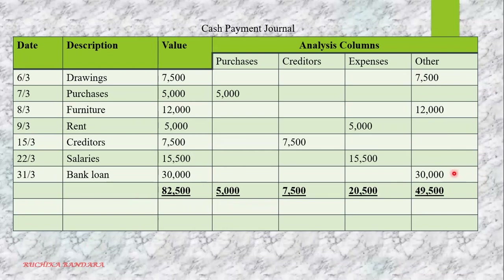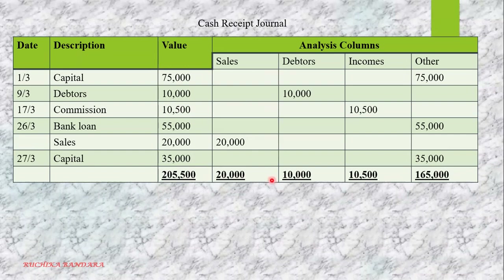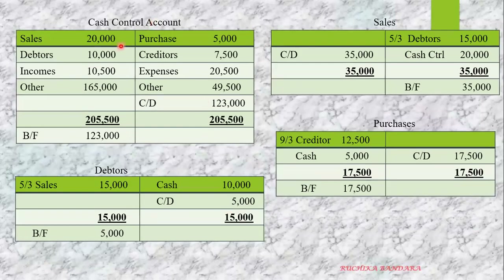After entering everything, we have to get the vertical addition. Sales $20,000 is the total. Debtors $10,000. Incomes $10,500. Other column $165,000. Get the value total as well — either horizontal or vertical addition gives the same amount. Then we think of the double entry. For total cash sales: cash control account debit $20,000, sales account credit $20,000.